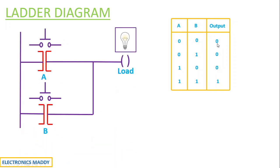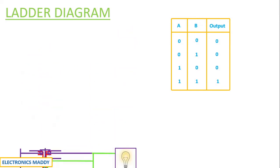Second case: when I am actually pressing switch B, consequently the push button switch is closed and coil B is energized in this particular case, and current starts flowing through the load and the light glows in this particular fashion.